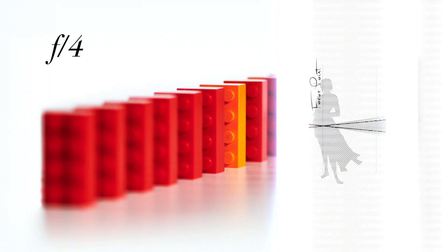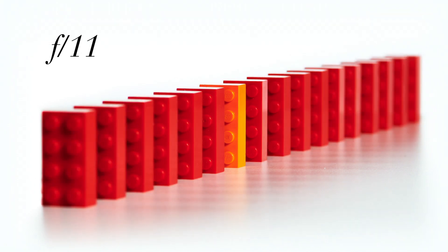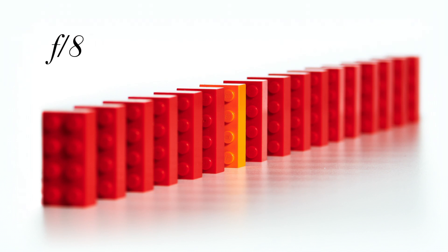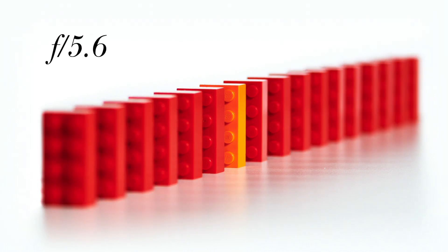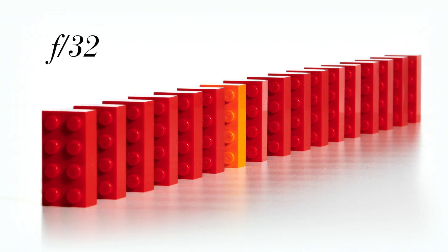Coming back to our LEGO, the depth of field and aperture changes are quite extreme because our lens is very close to the subject. At this distance, even at F32, not every brick is 100% in focus. That's when something like focus stacking would come into play — but we'll reserve that for another video.